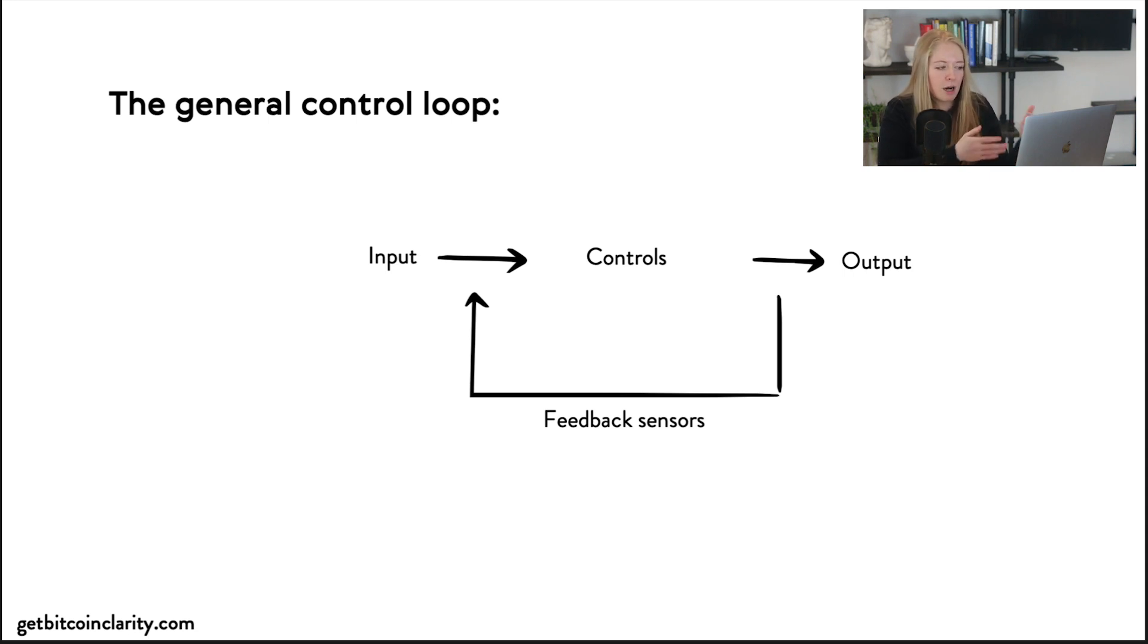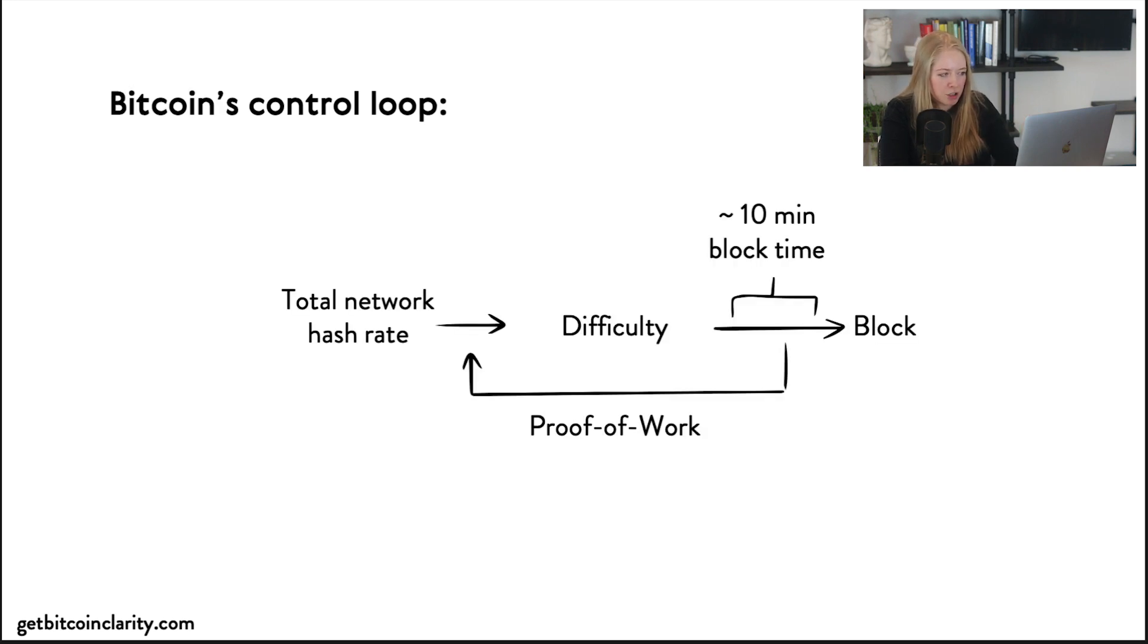Now to abstract this example and just look at the general case of a control loop, you have input, you have controls, you have output, and you have feedback sensors. The reason why you would want to use this mechanism is because your input varies and you want the same output no matter what your varied input is. I think that's such a cool system, so I'll show you the example in Bitcoin. Now we have a total network hash rate that varies, we have proof of work that is adjusted by its difficulty, and the result is not just the block with confirmed transactions and new bitcoins being released, but the actual desired outcome is to have that happen every 10 minutes as well.